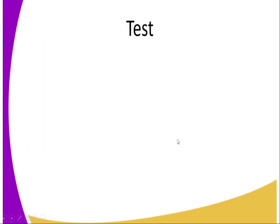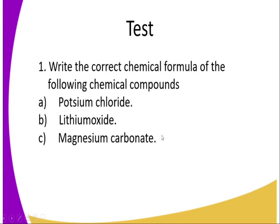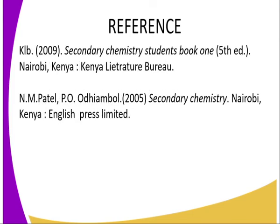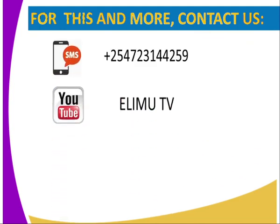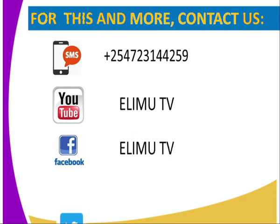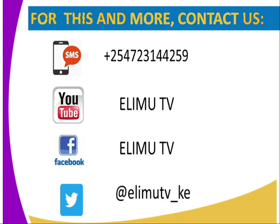Let's see whether we have met the goals of this lesson. Try to write the chemical formula of the following compounds correctly: potassium chloride, lithium oxide, and magnesium carbonate. You can refer to your students' book on chemistry as well as Patel. To contact us, send us an SMS through the number on your screen, or visit us on YouTube or Facebook at Elimu TV, or tweet at Elimu_TV_KE. Please do stay tuned to the lessons that follow and you will learn much more. Thank you for watching.